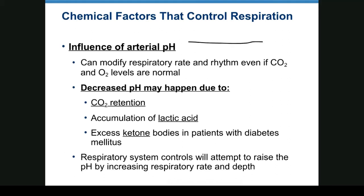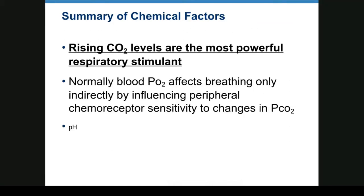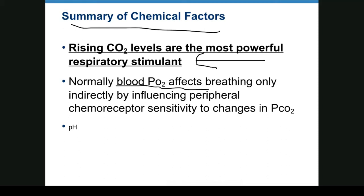Arterial pH can modify respiration even if CO2 levels are normal. Things that may decrease pH: CO2 retention, accumulation of lactic acid, ketone acids in patients with diabetes mellitus or people on the keto diet. The respiratory system attempts to raise pH by getting rid of hydrogen ions by expelling carbonic acid — which means getting rid of CO2. Summary: rising CO2 levels are the most powerful respiratory stimulant; oxygen is a factor only at extremely low levels; and low pH also increases respiration rate.